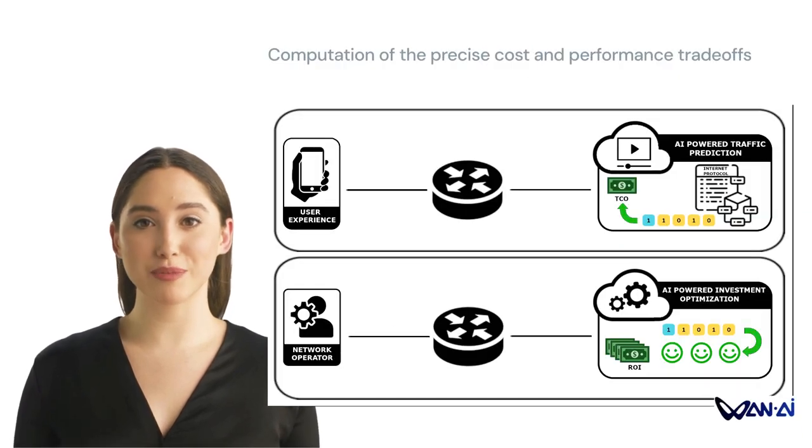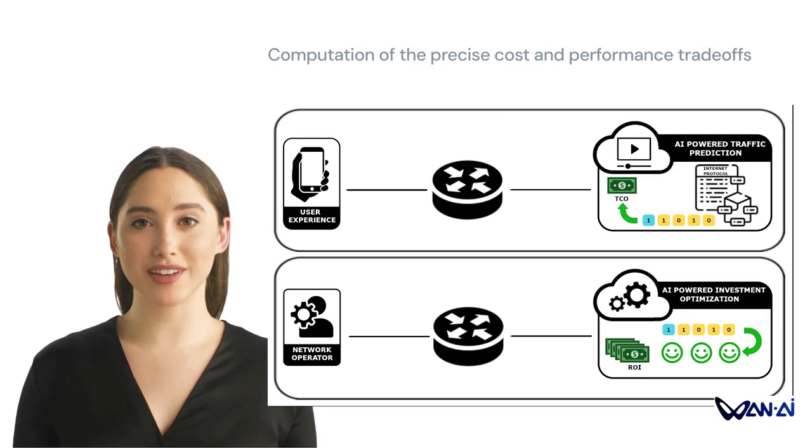The ultra-fast WAN AI computational engine calculates the exact operation of data transport protocols, such as QUIC and TCP, based on the current network state, and thus makes the end-user demand visible to the operator in real-time.